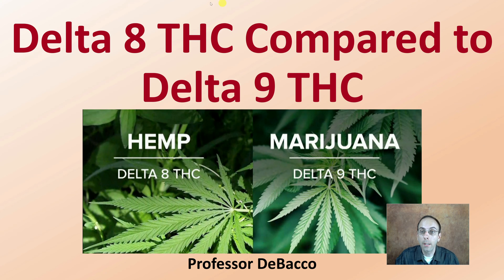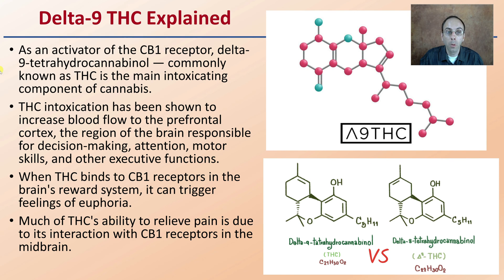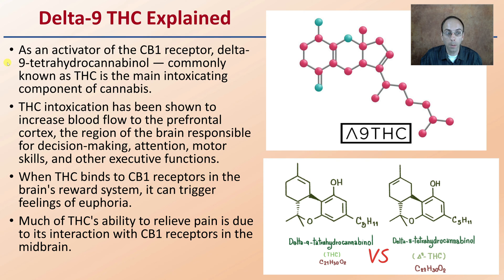Let's get into Delta-8 THC compared to Delta-9 THC. Delta-8 THC can be classified currently as hemp, where Delta-9 THC is what can classify a cannabis plant as marijuana. Let's explain Delta-9 THC, something you might be more familiar with. It is an activator of the CB1 receptor, commonly known as THC, and is the main intoxicating component to cannabis.